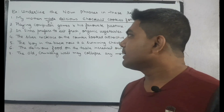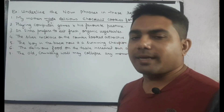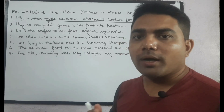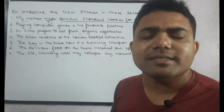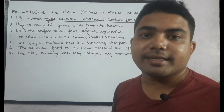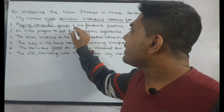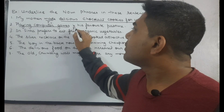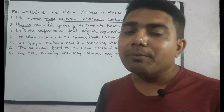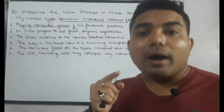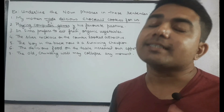Sentence number two: 'Playing computer games is his favorite pastime.' Let's question with 'what': What is his favorite pastime? The answer we are getting is 'playing computer games.' Here 'is' is the finite verb. So after questioning the verb with 'what,' if we get a phrase as an answer, it is a noun phrase.